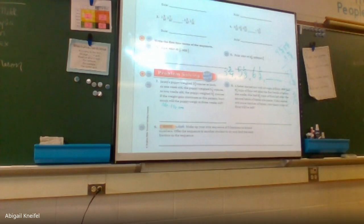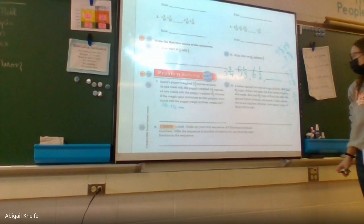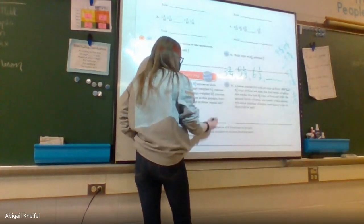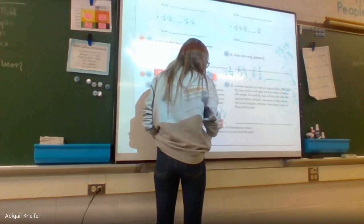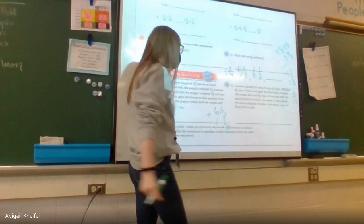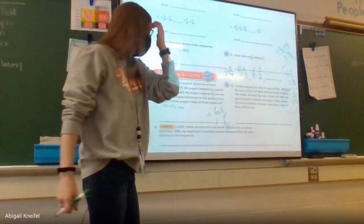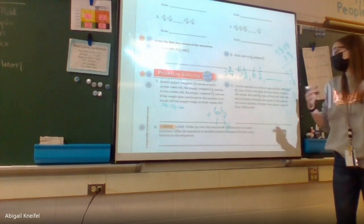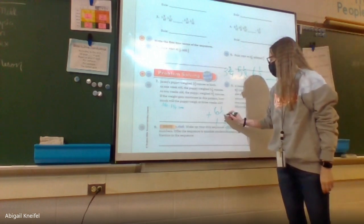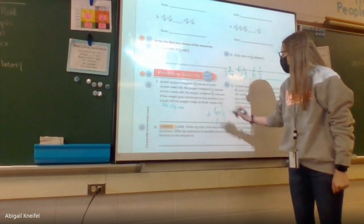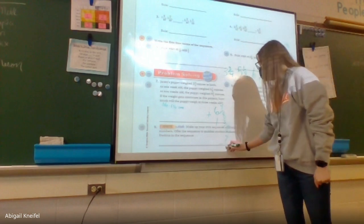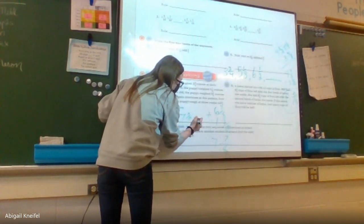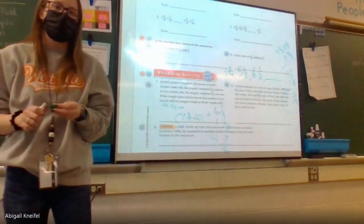Now how do I find what the puppy weighs in week three? We take what it weighed at week two and add what it's gaining each week. Can I add them as is? No — least common denominator of two and eight is eight. I change one half to four eighths. Four plus three is seven eighths; six plus one is seven. The puppy will weigh seven and seven eighths ounces on week three.